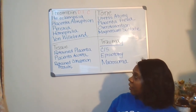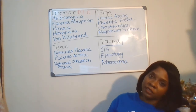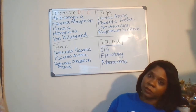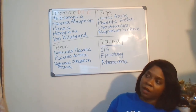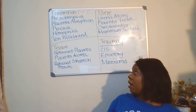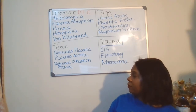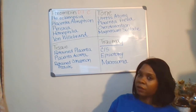Placenta accreta is a condition that affects your tissues of not only your vagina but it goes deeper — it goes into your myometrium, which is your muscle. That can cause problems so much so that the mom may even have to get a hysterectomy. The last one is retained conception products — I think that's pretty self-explanatory.